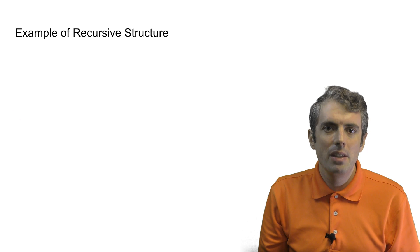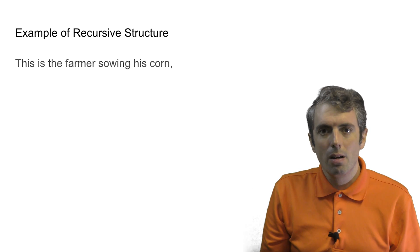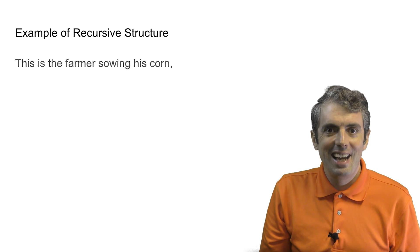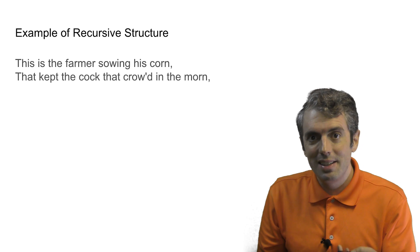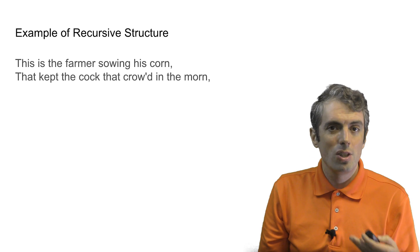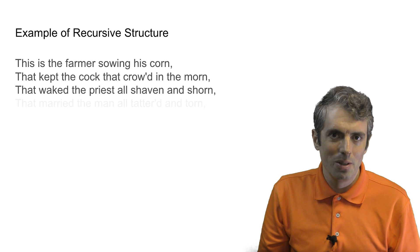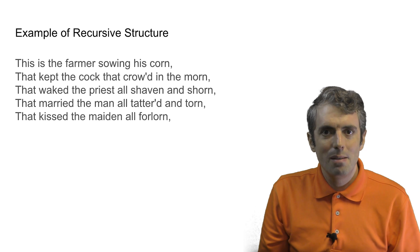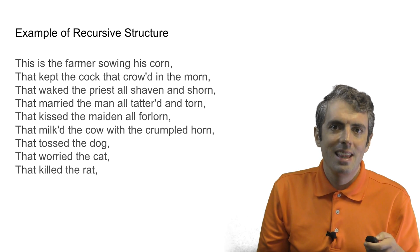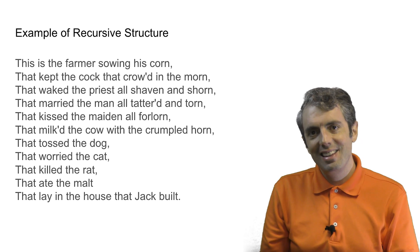So what does it mean for a language to be recursive? You can embed a statement in another. There's a famous children's rhyme about the house that Jack built. 'This is a farmer sowing his corn.' We're going to change the meaning of that by connecting it to another phrase: 'That kept the cock that crowed in the morn.' These phrases are changing the meaning of the thing that came before. 'That waked the priests all shaven and shorn. That married the men all tattered and torn. That kissed the maiden all forlorn. That milked the cow with the crumpled horn. That tossed the dog. That worried the cat. That killed the rat. That ate the malt. That lay in the house that Jack built.' And we can keep going like this forever.